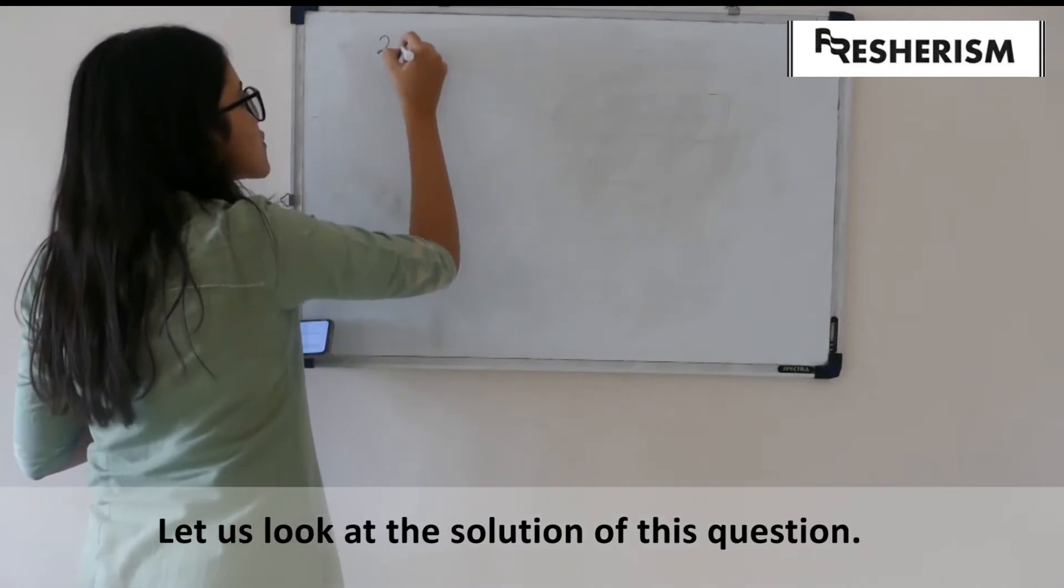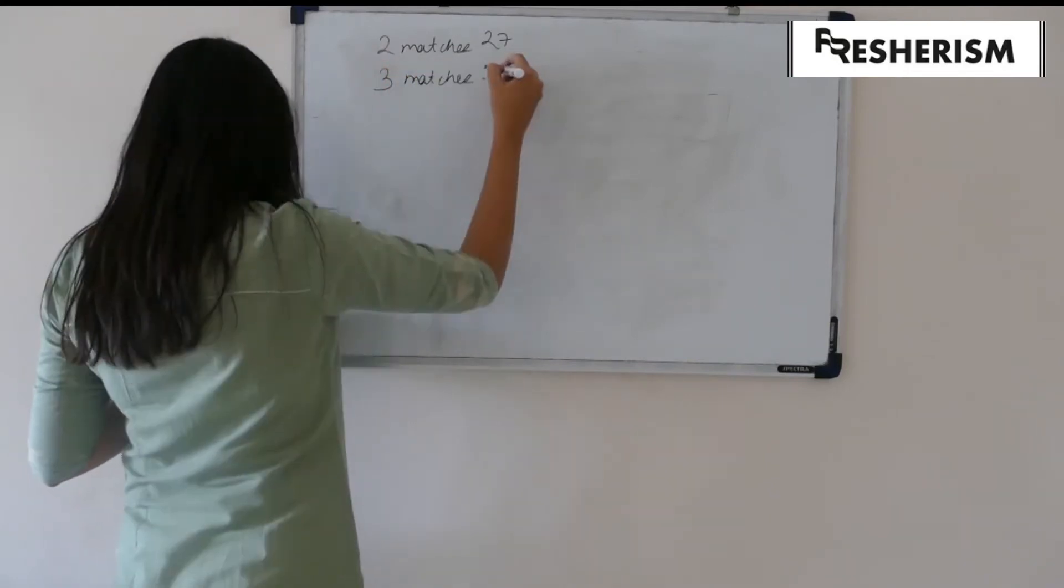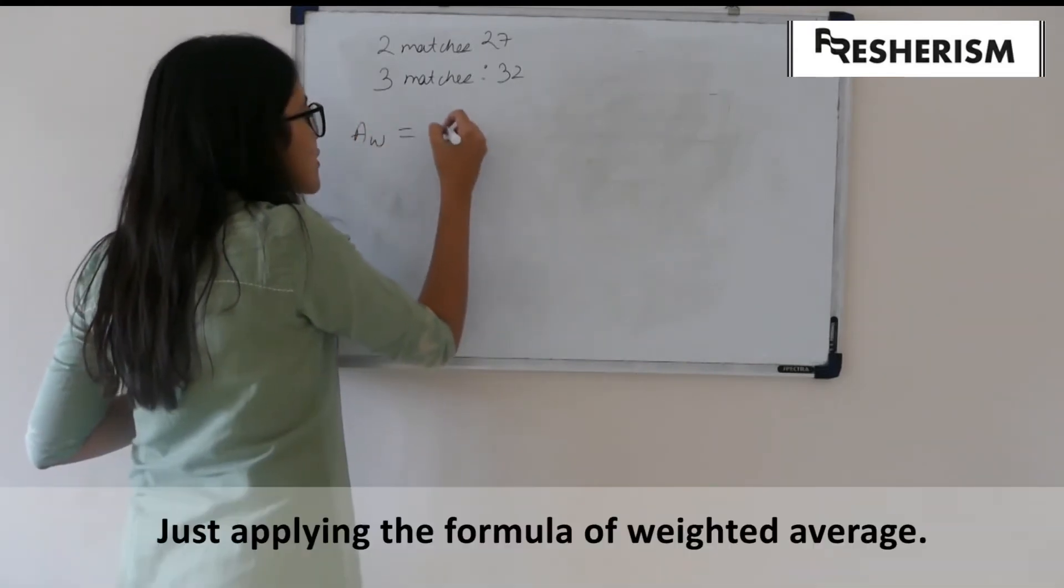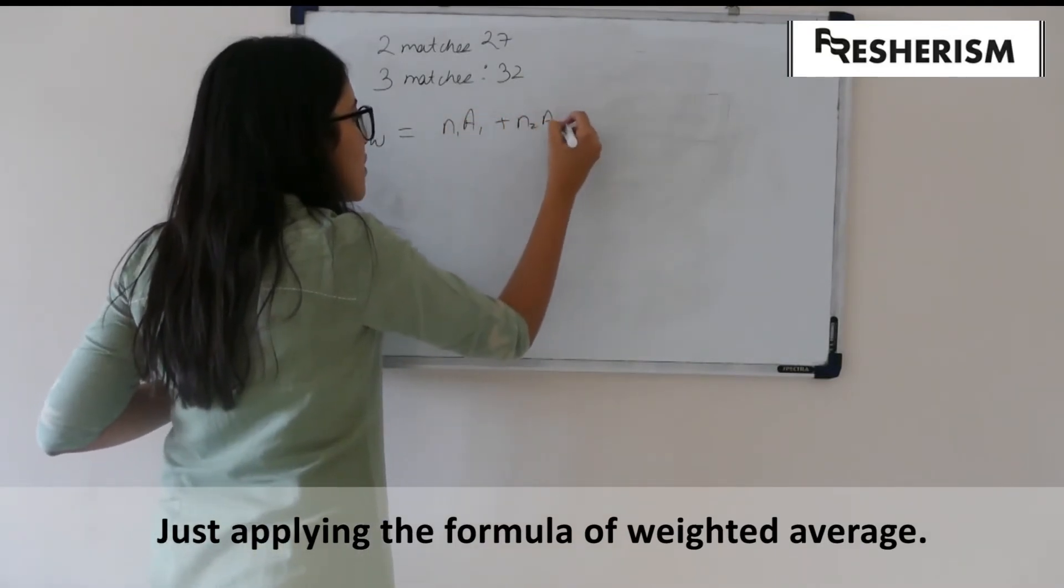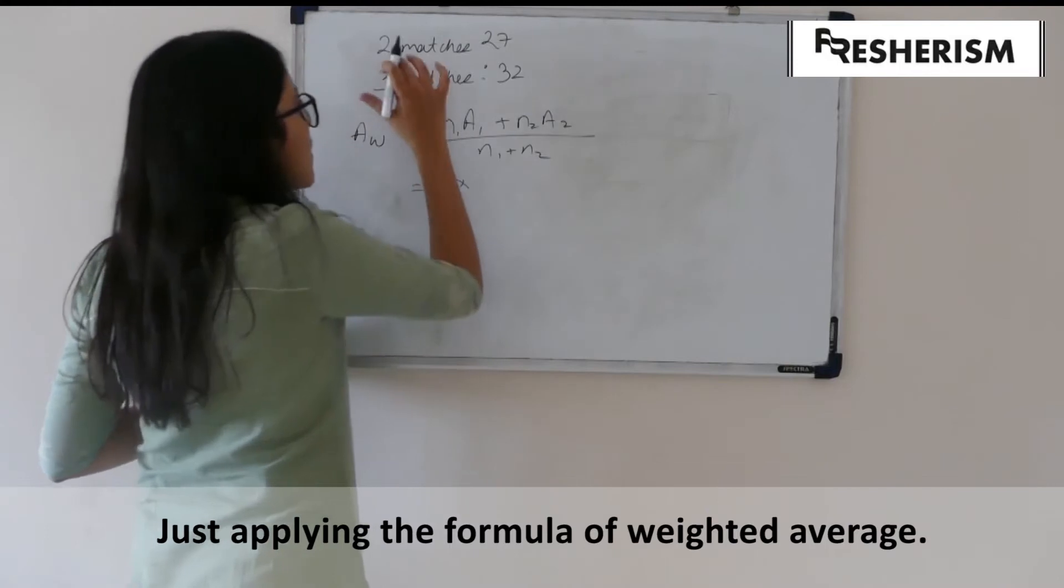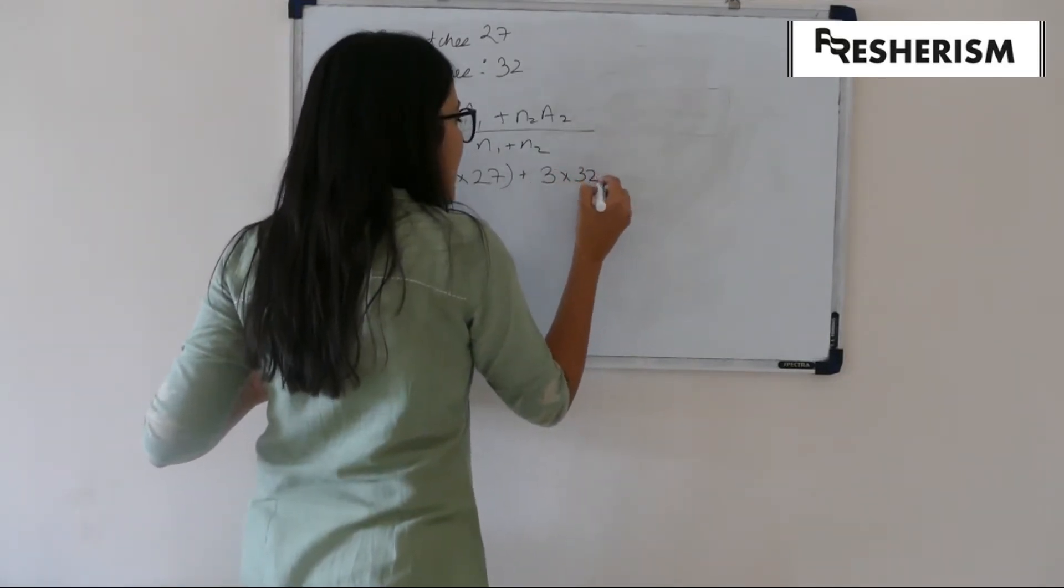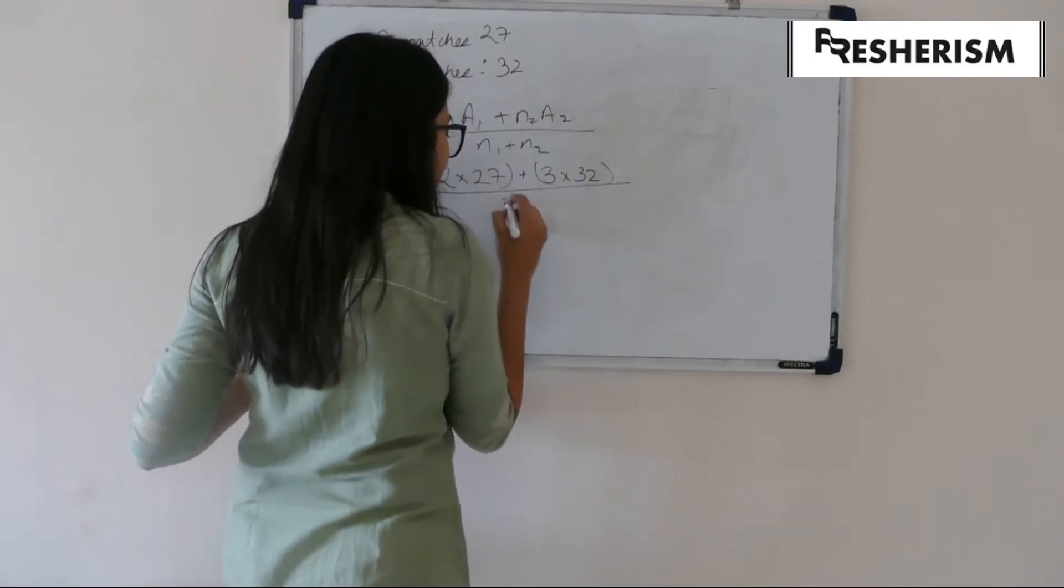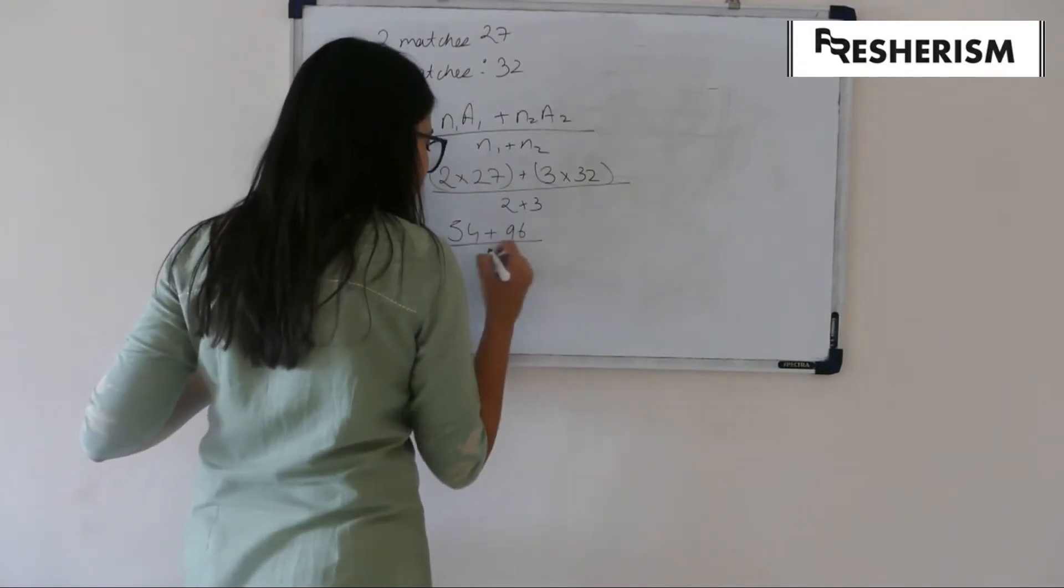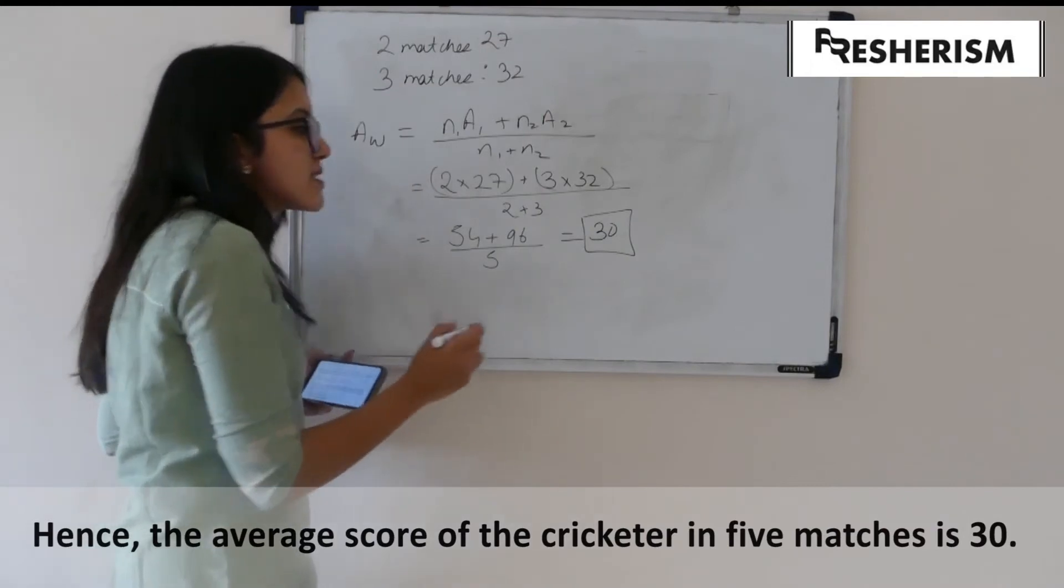Then find the average score in all five matches. The average score of the cricketer in first two matches was 27 and in next three matches was 32. Therefore, if we apply our formula, we get 2 into 27 plus 3 into 32 divided by 2 plus 3, which gives us 54 plus 96 by 5, which is 30. Hence, the average score of a cricketer in five matches is 30.